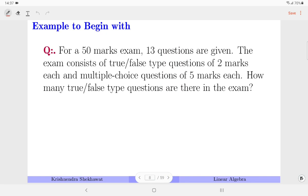Consider an example. There is a 50 marks exam and 13 questions are given. True false questions are 2 marks each and MCQ questions are 5 marks each. How many true false questions are there? To answer it we need to model it using a system of equations. Let's say there are x true false questions and y MCQ questions. The first equation is x plus y equals 13 because 13 questions are given. The next equation comes from the total marks. If you solve them then you will get x equals 5, which means the number of true false type questions are 5.